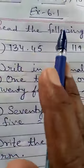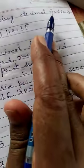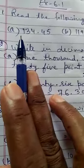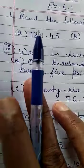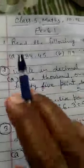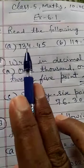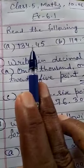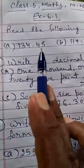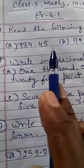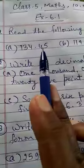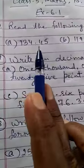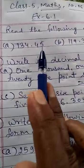We will start exercise 6.1. Question number 1: read the following decimal fraction. How do you read it? The whole number part you will read as usual, like here 134, then the decimal point - you will read 'point', and then the decimal part you will read separately. You will not read 45 as forty-five, but as four-five. So finally, 134.45 is read as one hundred thirty-four point four five.